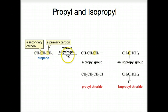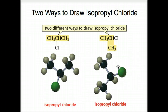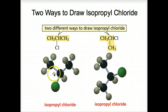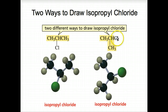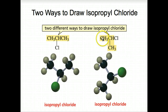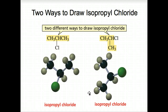Here's propane — removing a hydrogen, it becomes a propyl group. There are two ways to draw isopropyl chloride: one showing the branch structure, and one showing strictly the iso structure where chlorine is off the middle carbon. And actually, these are the same molecule — three carbons, chloride off the middle, the same number of hydrogens. So it's actually the same molecule drawn differently.